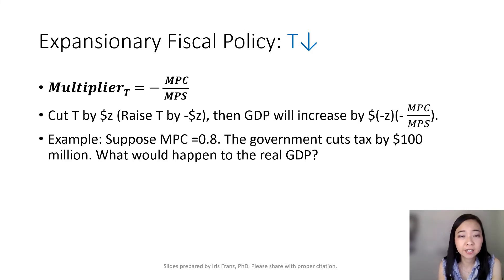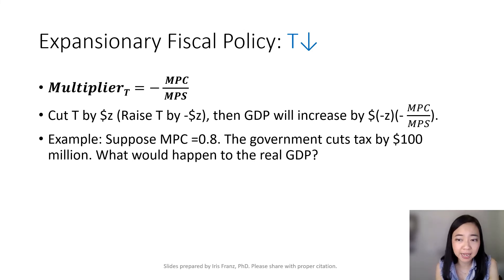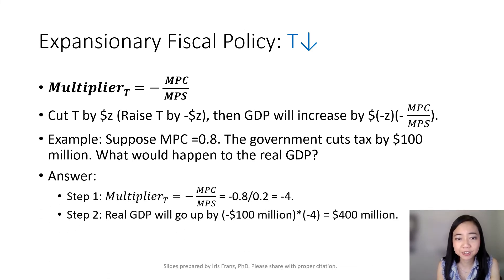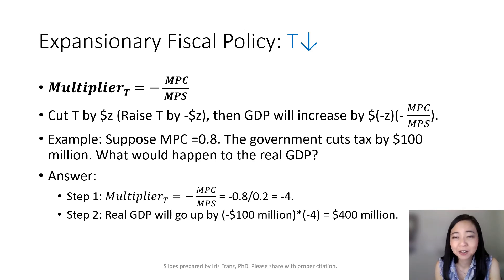Recall also that the tax multiplier is equal to negative MPC over MPS. Therefore, if we cut our tax by Z dollars, then our GDP is going to go up by negative Z times negative MPC over MPS. For example, suppose our MPC is equal to 0.8 and the government cuts tax by 100 million dollars. We first calculate our tax multiplier, which is equal to negative MPC over MPS, and that gives you negative 4. So our real GDP is going to go up by negative 100 million times negative 4, which gives you 400 million. By cutting tax of 100 million dollars, you are going to raise real GDP by 400 million dollars.